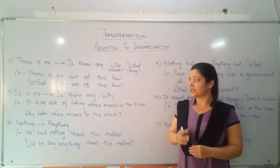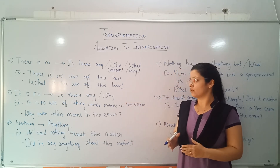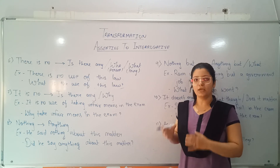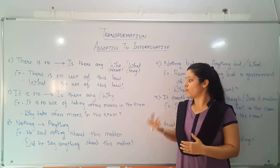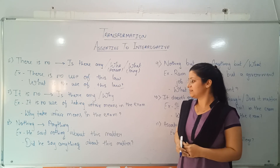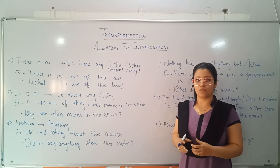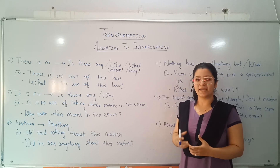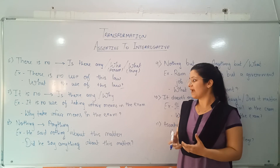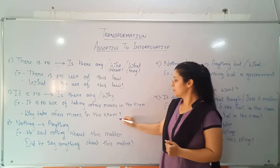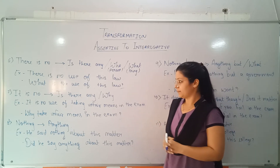Next, 'it is no' will be replaced with 'is there any' or 'what'. For example, 'It is no use of taking unfair means in the exam.' We replace it with: 'Why take unfair means in the exam?' and end the sentence with a question mark.